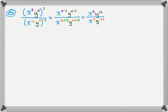Now what I have is x to the ninth over x to the eighth. Notice there's no addition or subtraction in this problem. If addition and subtraction show up, the problem is much more complicated. But if you're only dealing with multiplication and division, the rules of exponents can be applied really quickly and you can fly through these problems once you know what you're doing. Same base dividing — I'm going to subtract the exponents.